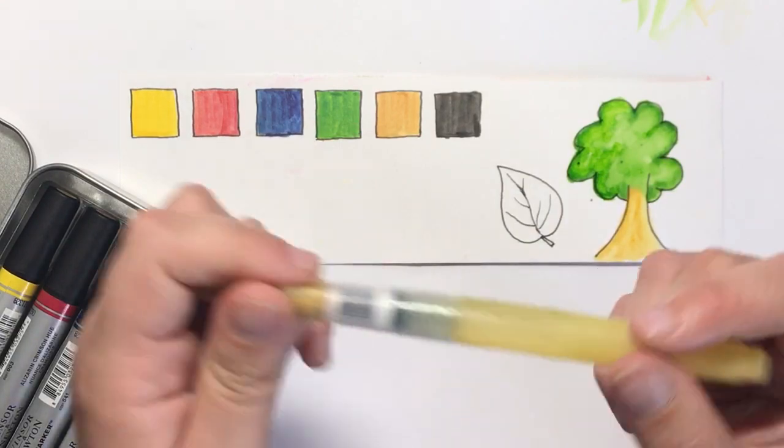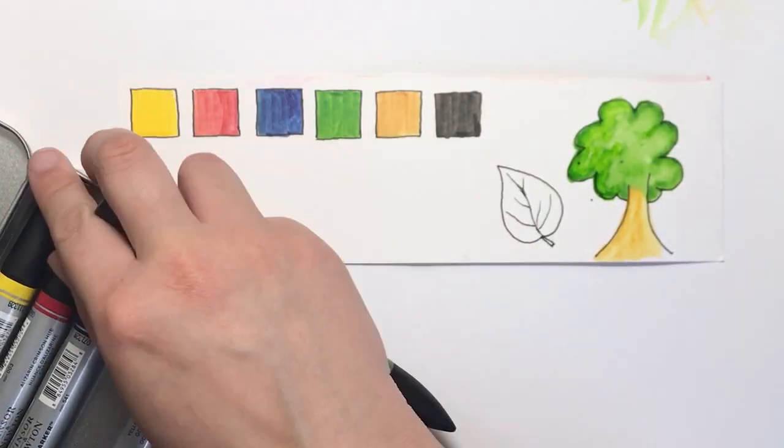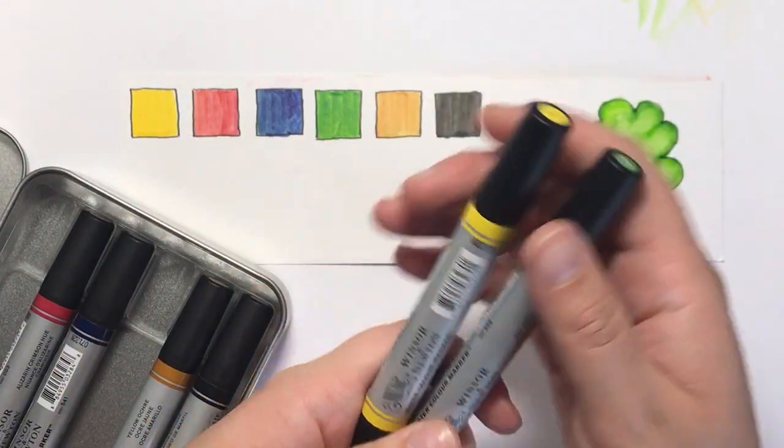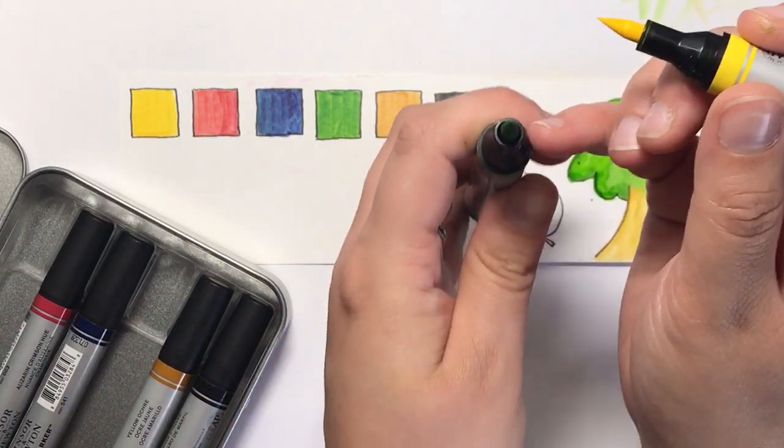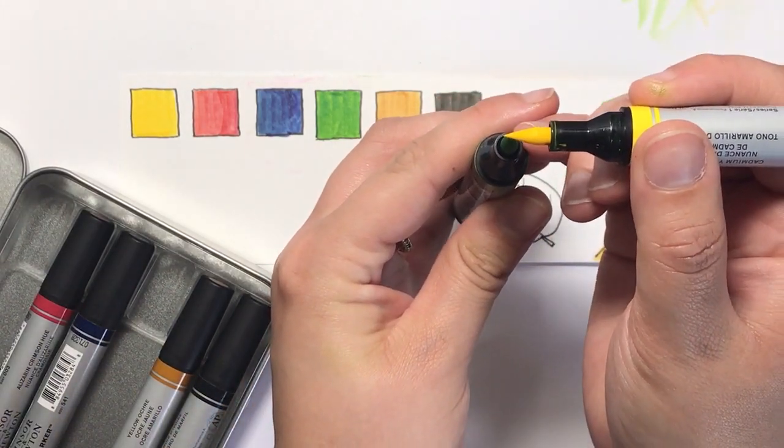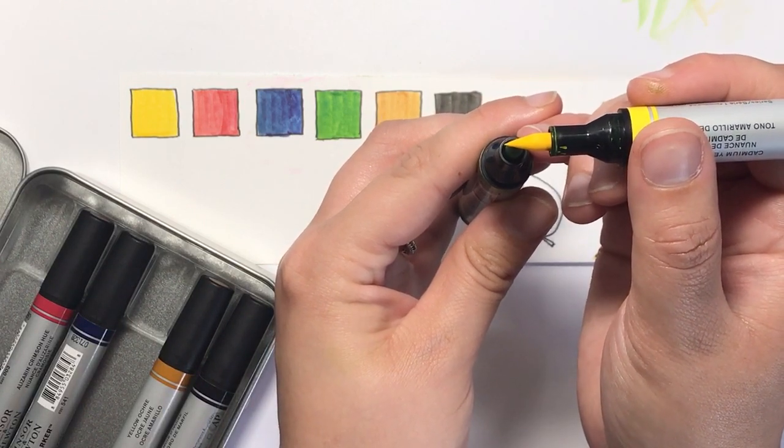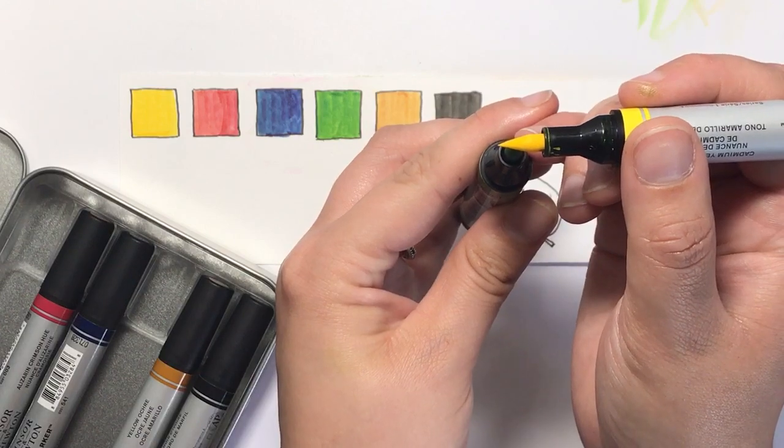There's a few tricks you can do with these markers, such as the touch tip method, which is similar to what you would do with chameleon pens. So you take two colours and you always make sure that the lighter colour is on the top because we don't want to stain the tips. Then we touch the two tips together and wait a few seconds for the ink from the darker colour to absorb into the lighter colour. The longer you wait, the longer your blend is going to last.